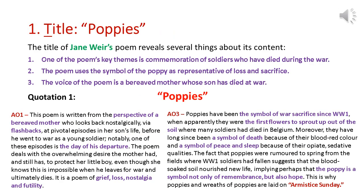Moving on to Poppies by Jane Weir: if we look at the title of this poem, it tells us immediately that one of the poem's key themes is the commemoration of soldiers who've died during the war. We also know that the poem uses the symbol of the poppy as representative of loss and sacrifice. Finally, it's important to acknowledge that the voice of this poem is a bereaved mother whose son has died at war, so we can see that war and conflict affects other people — not just the soldiers who fight in it.